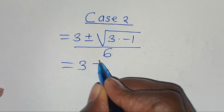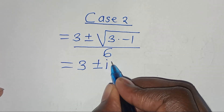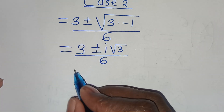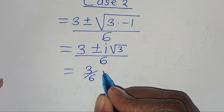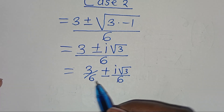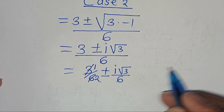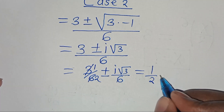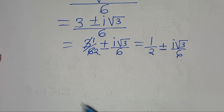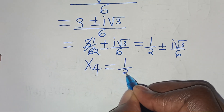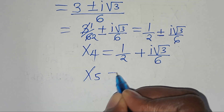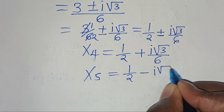So this implies 3 plus or minus the square root of minus 3 divided by 6. We can express the square root of minus 3 as the square root of 3 times minus 1, and the square root of minus 1 is i, giving i square root of 3, divided by 6. Simplifying, 3 over 6 is one half and i square root of 3 over 6 remains, so x₄ is equal to one half plus i square root of 3 over 6, and x₅ is equal to one half minus i square root of 3 over 6.